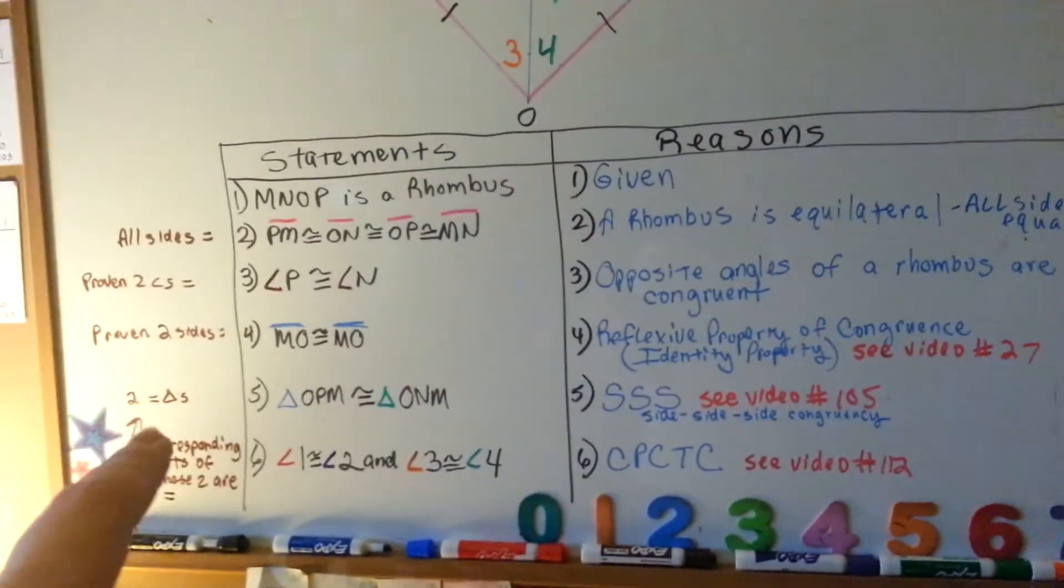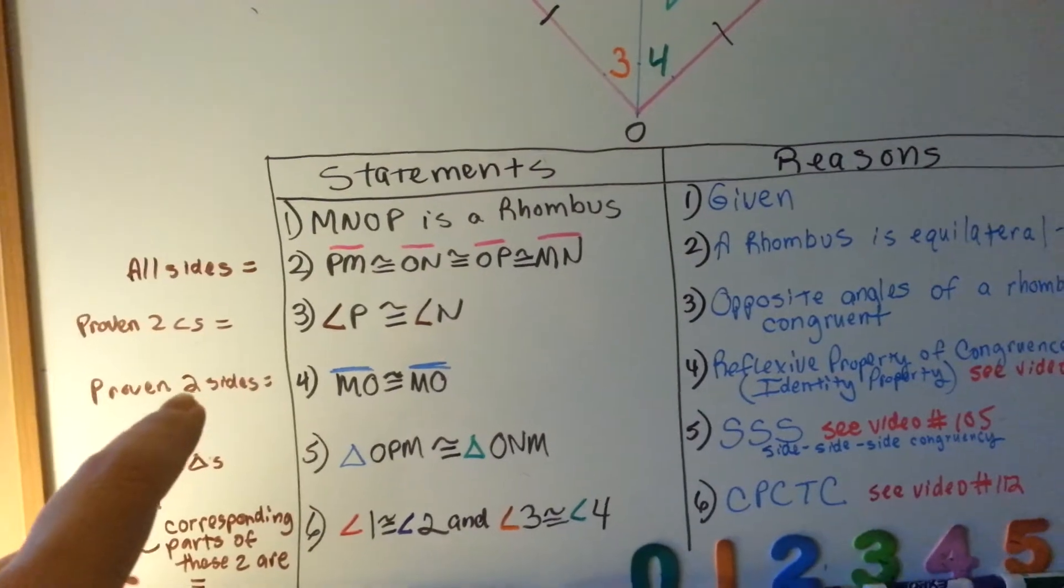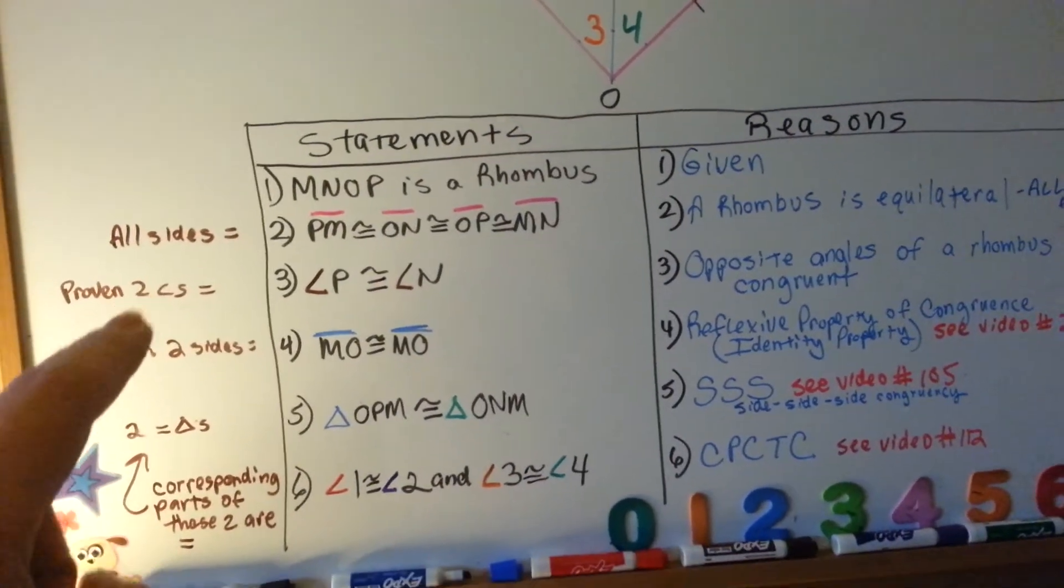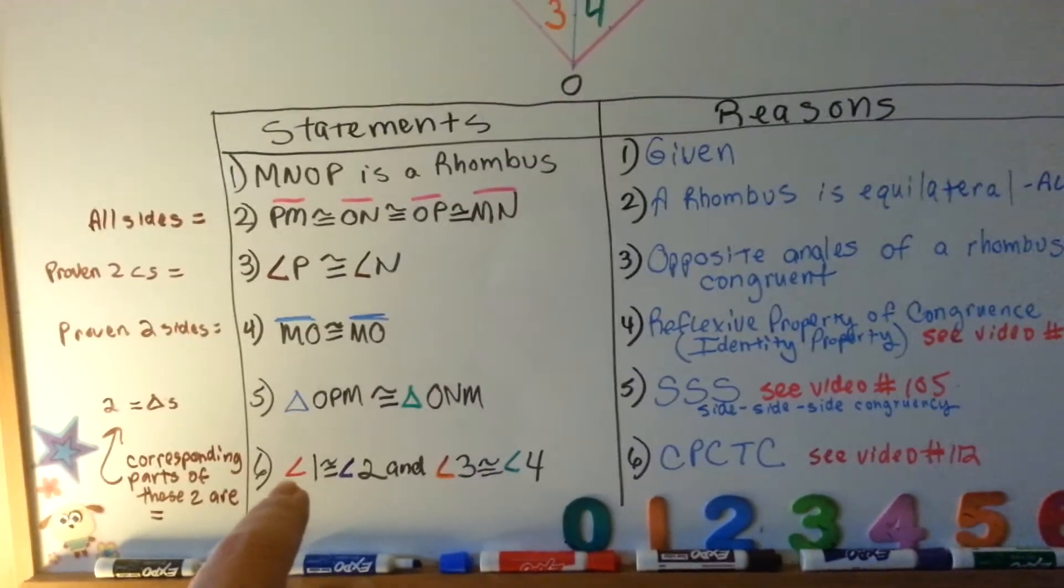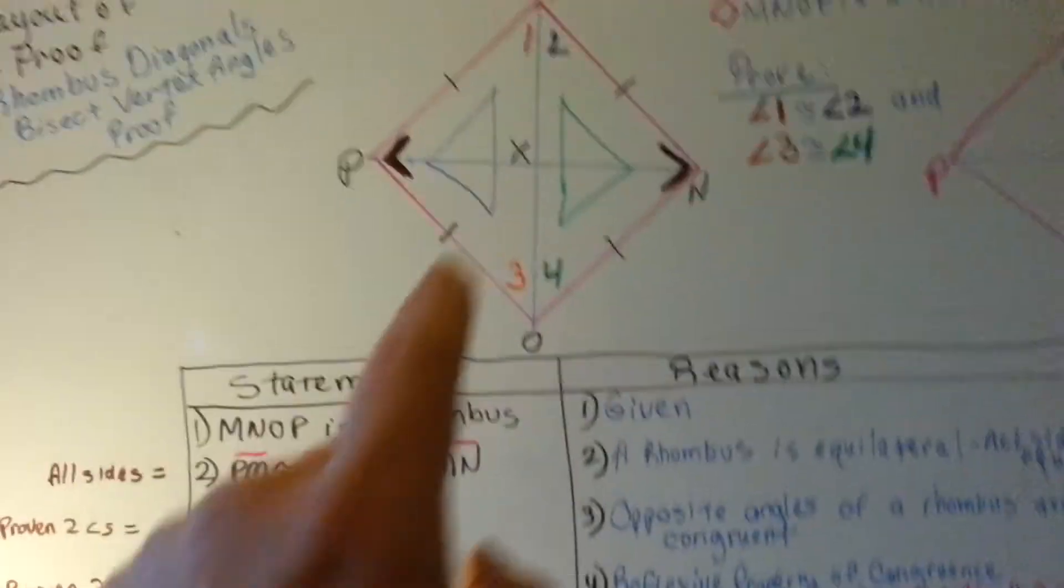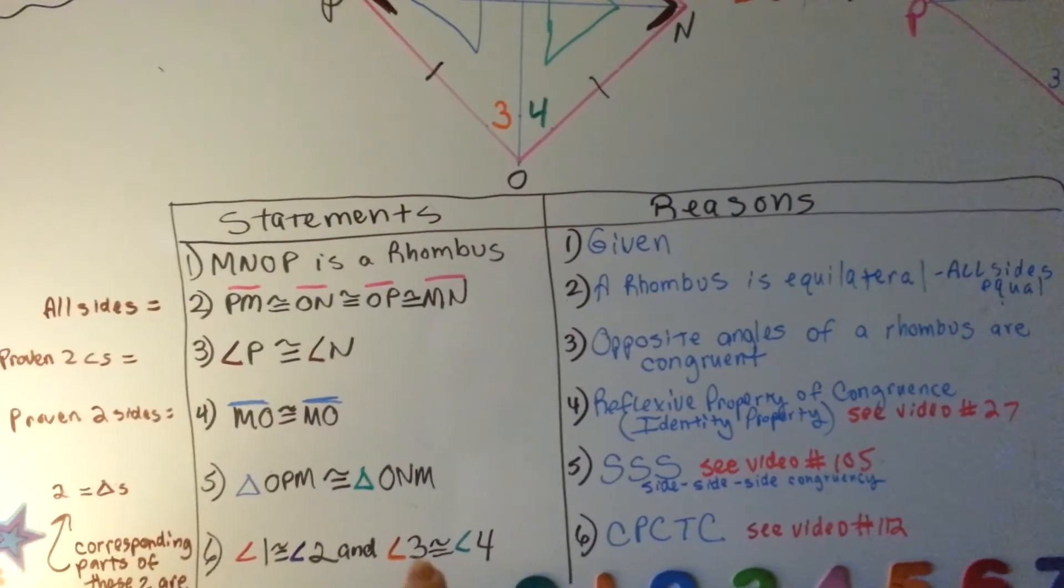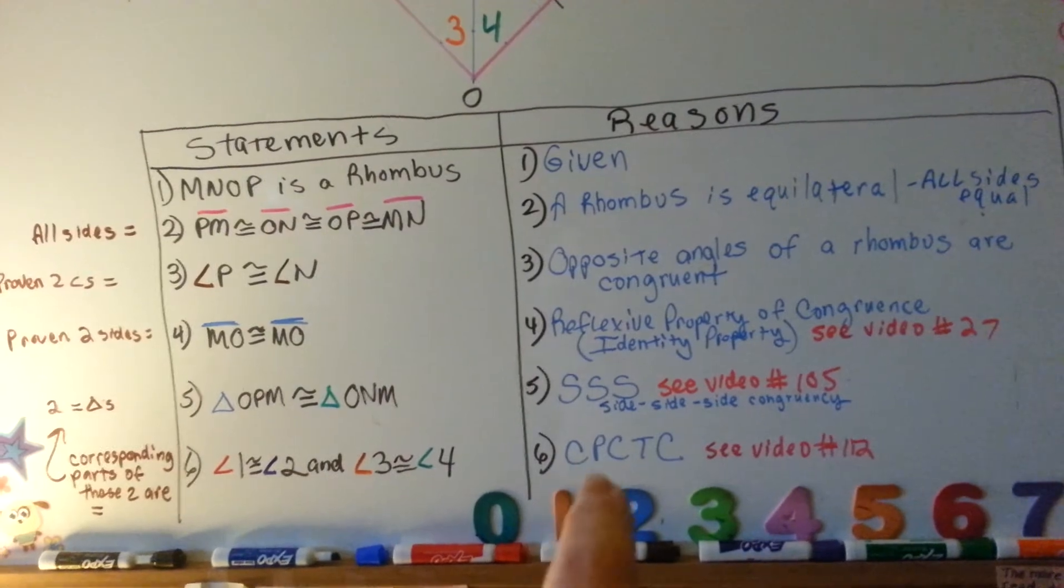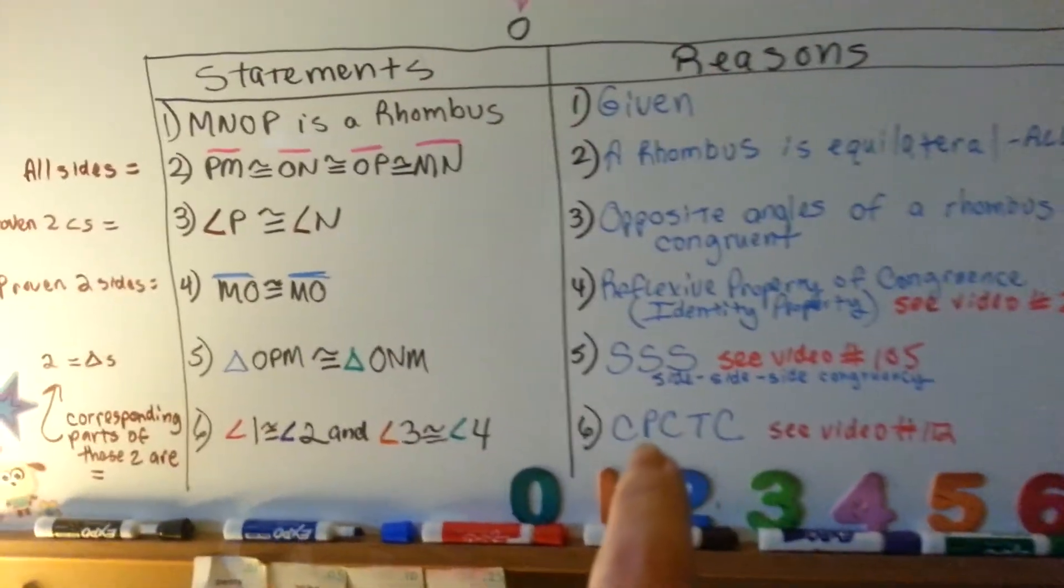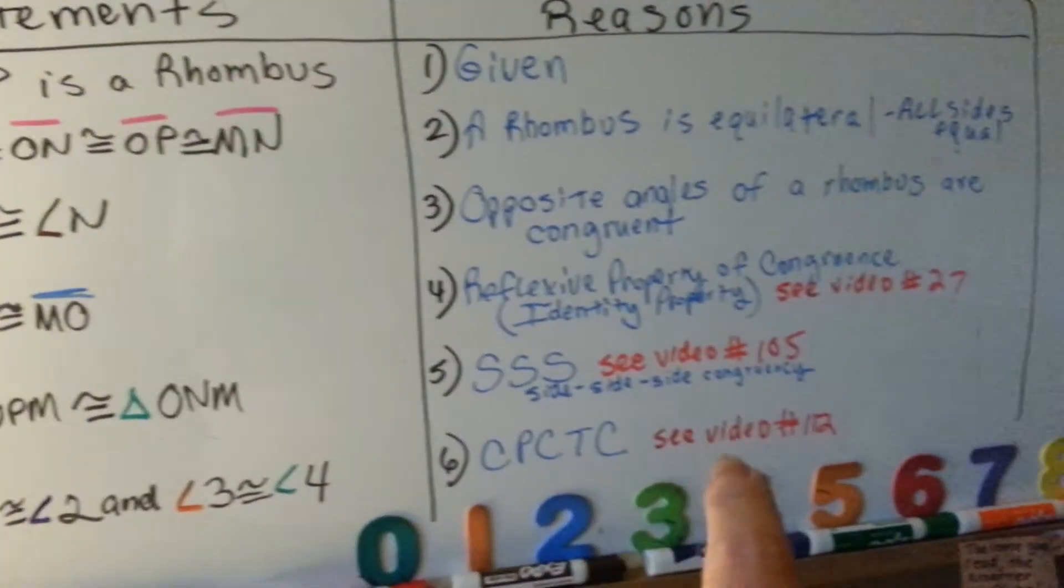Now we've got two congruent triangles, two triangle sides that are congruent and angles that are congruent. Now we can say that angle one and angle two, the red one and the purple one, are congruent, and that the orange one and the green one are congruent, and our reasoning is CPCTC. That's the corresponding parts of congruent triangles are congruent. That's video 112.